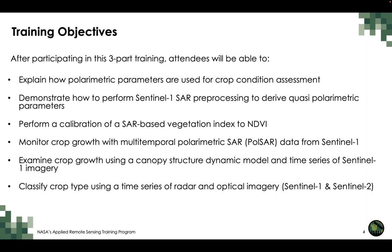After participating in this three-part webinar series, attendees will be able to explain how polarimetric parameters are used for crop condition assessment, demonstrate how to perform Sentinel-1 SAR preprocessing to derive quasi-polarimetric parameters, perform a calibration of a SAR-based vegetation index to the NDVI, monitor crop growth with multi-temporal polarimetric SAR data from Sentinel-1, examine crop growth using a canopy structure dynamic model and time series of Sentinel-1 imagery, and classify crop type using a time series of radar and optical imagery.